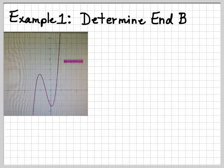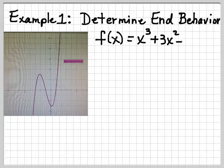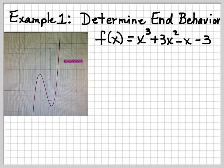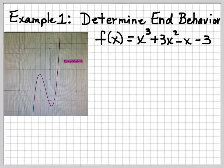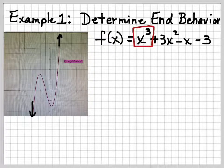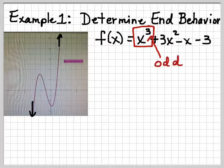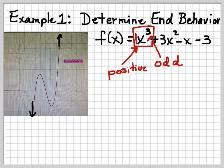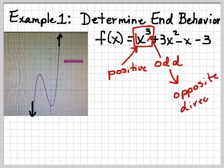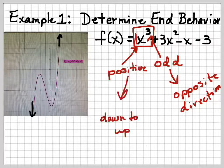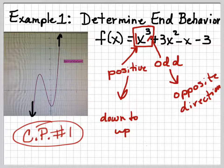I've graphed the equation 4x cubed plus 3x squared minus 2x minus 6 on my graphing calculator. In the graph it goes from down to up. How do we know that? The degree is 3, which is odd, so the ends go in opposite directions. The leading coefficient is positive, so it goes from down to up — it tends like a positive slope. Go ahead and do checkpoint number 1.